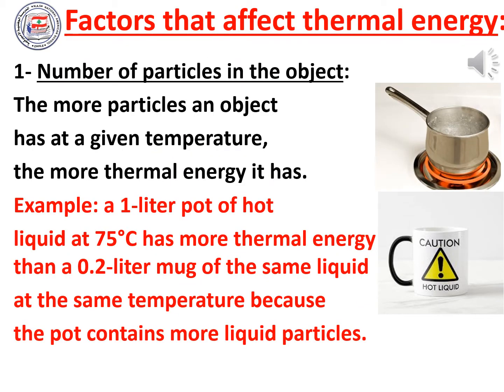The first factor that affects the thermal energy of an object is the number of particles. The more particles an object has at a given temperature, the more thermal energy it has. For example, a 1-liter pot of hot liquid at 75°C has more thermal energy than a 0.2-liter mug of the same liquid at the same temperature, because the pot contains more liquid particles — a larger number of particles means greater thermal energy.